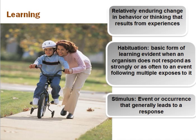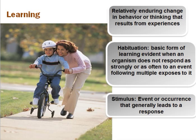There's something called habituation — this is the basic form of learning evident when an organism does not respond as strongly or as often to an event following multiple exposures to it. And there's a stimulus, which is an event or occurrence that generally leads to a response. For this slide you really only need to know what a stimulus is and the definition of learning — that relatively enduring change in behavior. Learning begins at birth and continues until death, and it is not unique to humans; it also applies to animals.